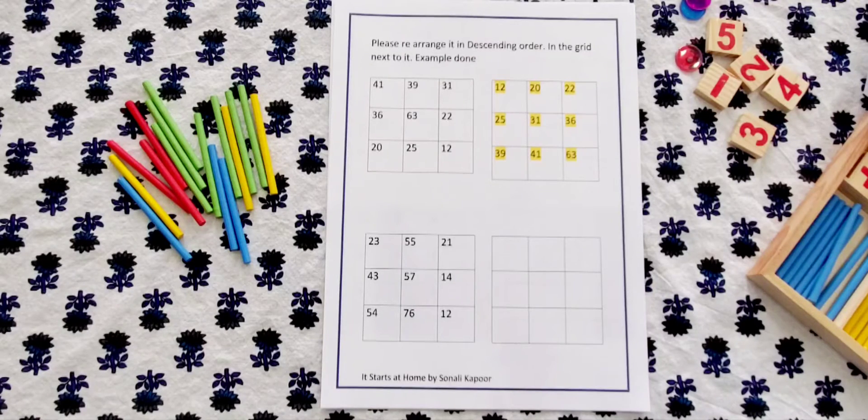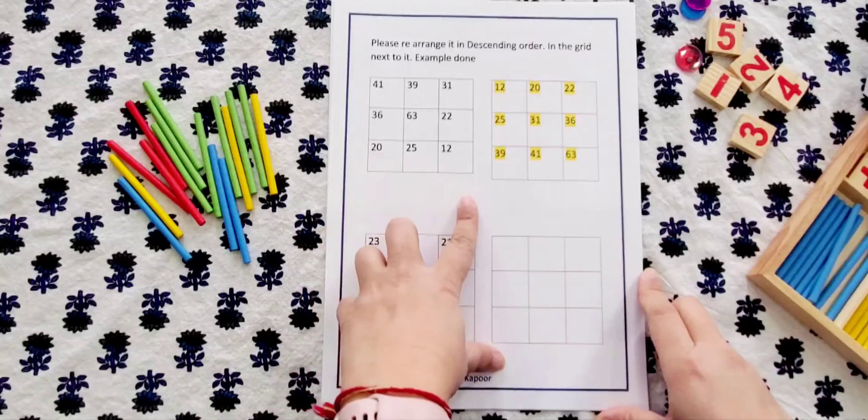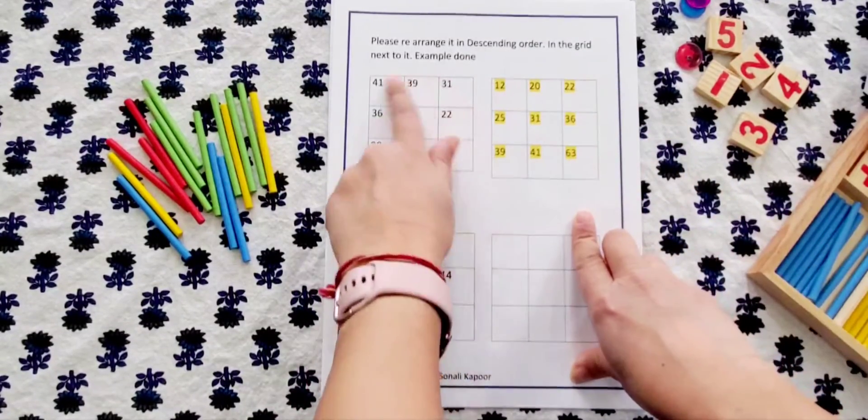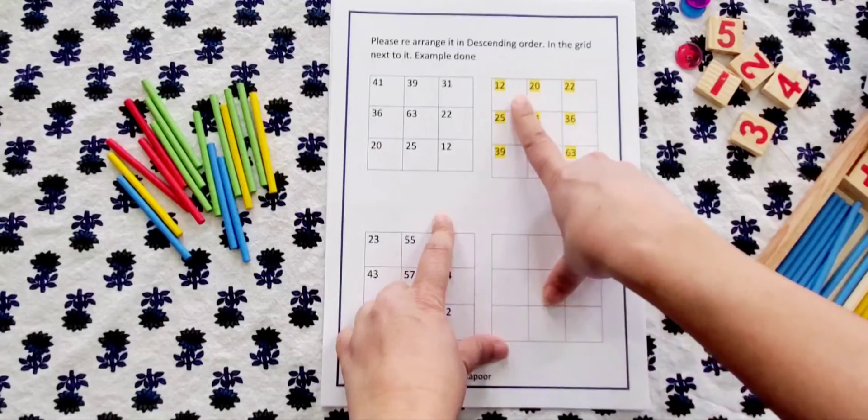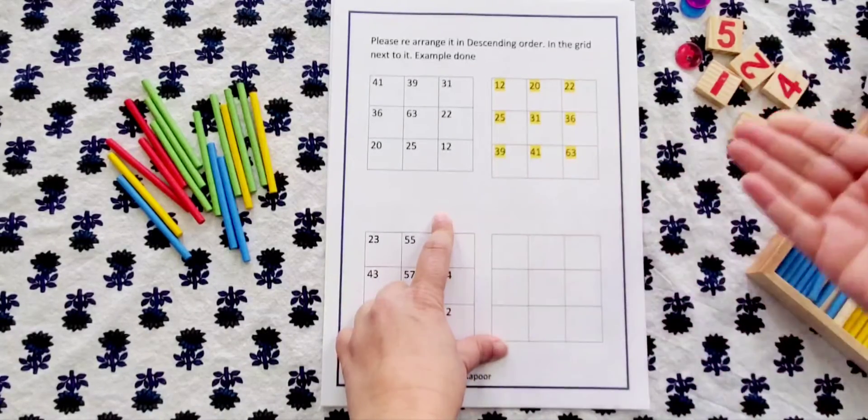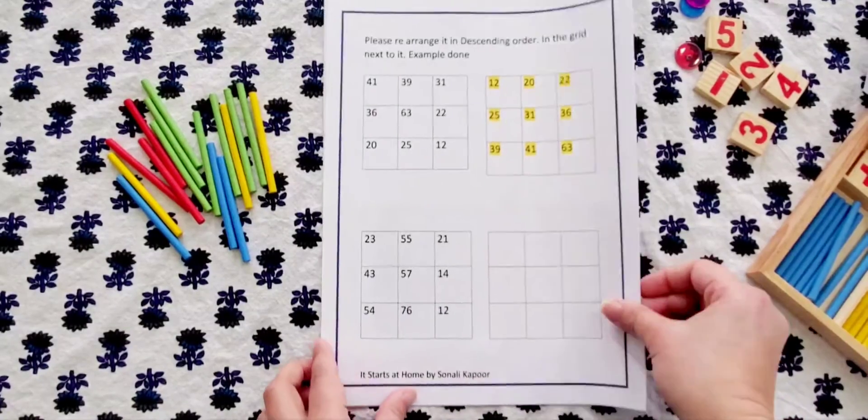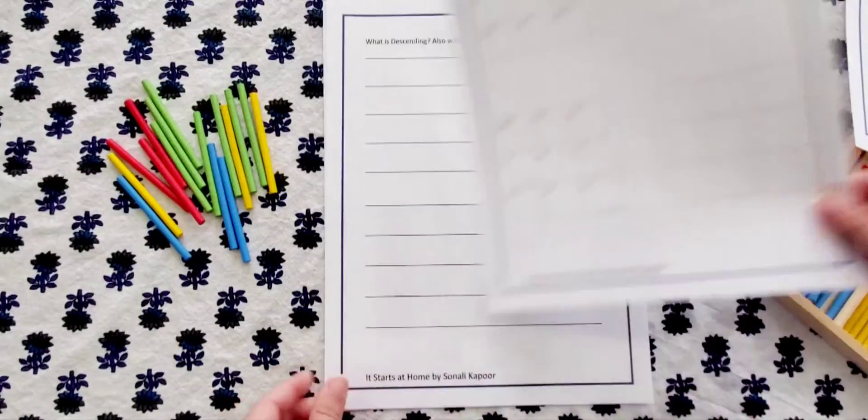Okay, moving on. Please rearrange it in descending order in the grid next to it. Example is done, so the numbers are done here and you need to organize it in descending order. So one is already done here, the second one you need to do, then you have a couple of things to do here.